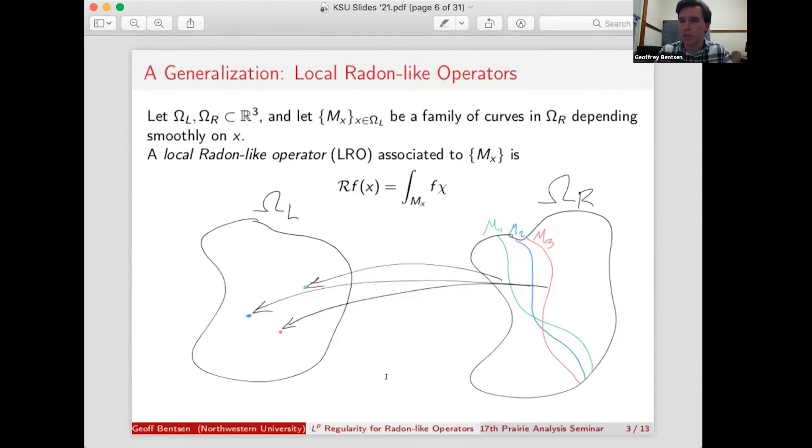So in our case, we're just going to be looking at radon-like operators over curves in R3. So we start off with two open sets, domains, omega L and omega R. And then for each x in omega L, I associate the curve Mx in omega R, which this family of curves will depend smoothly on x. Then a local radon-like operator associated to this family of curves is defined by just taking your function f, hitting it with some smooth bump function so that everything is local, and then integrating that along the curve Mx for each x.